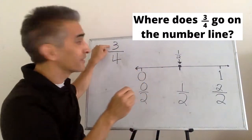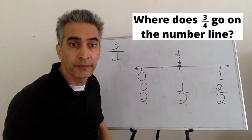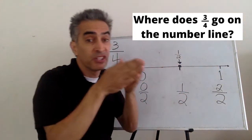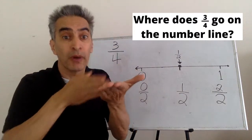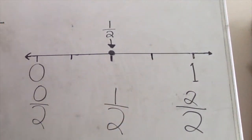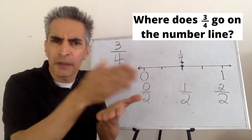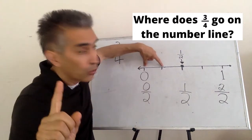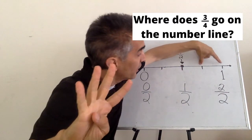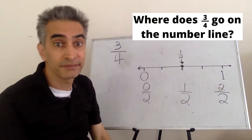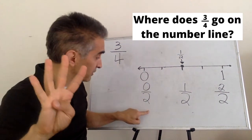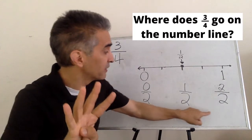Next, where does three-fourths go on the number line? This four in the denominator means we take this line and split it into four equal parts. How many parts do you see? One, two, three, four. Now write the denominator four right here, here, here, here, here, and here.